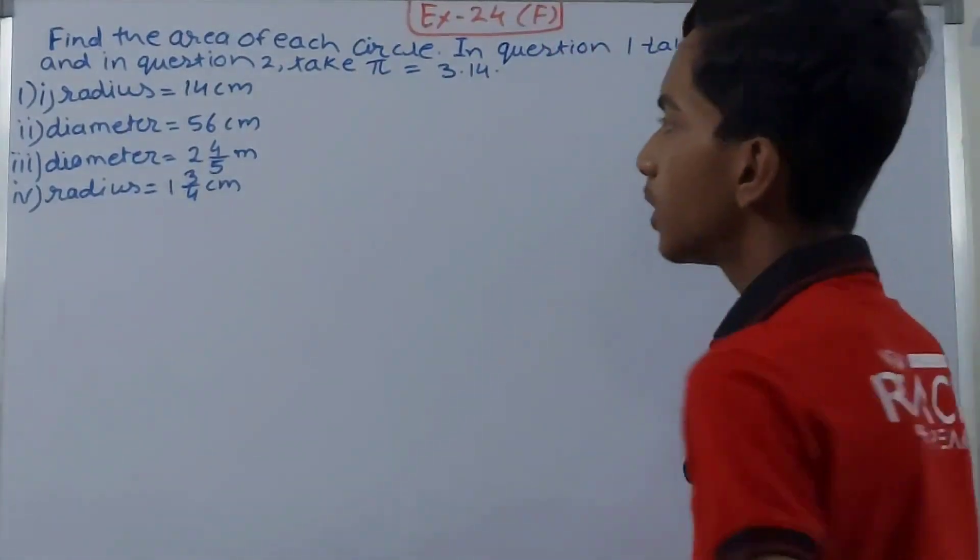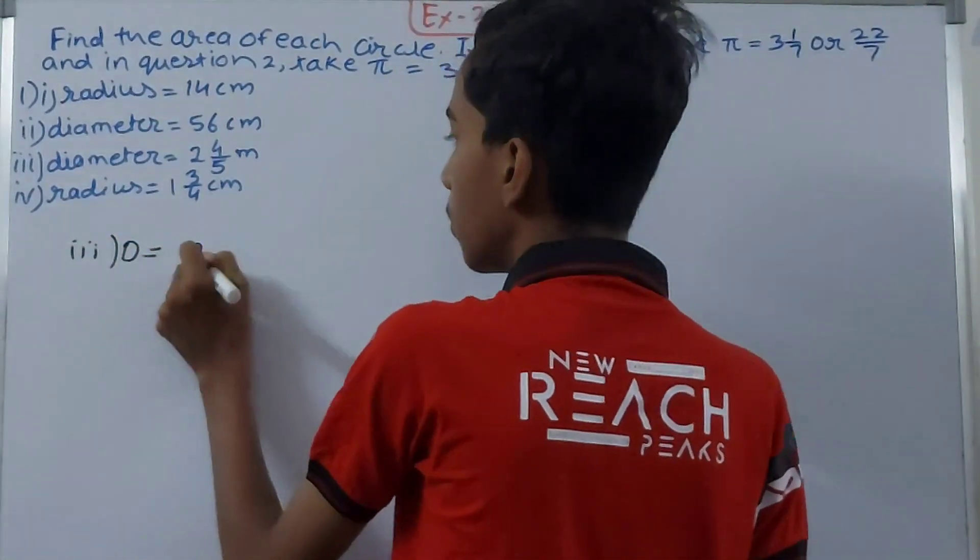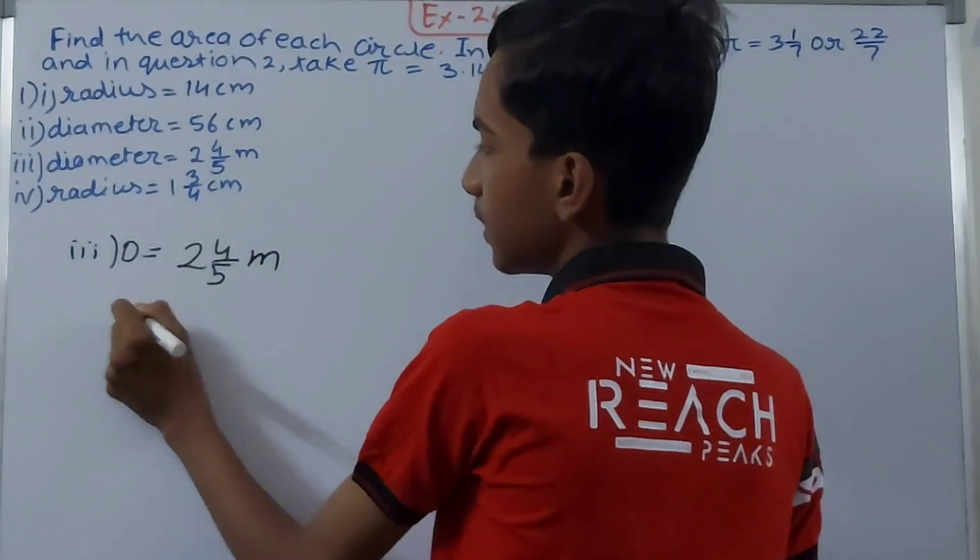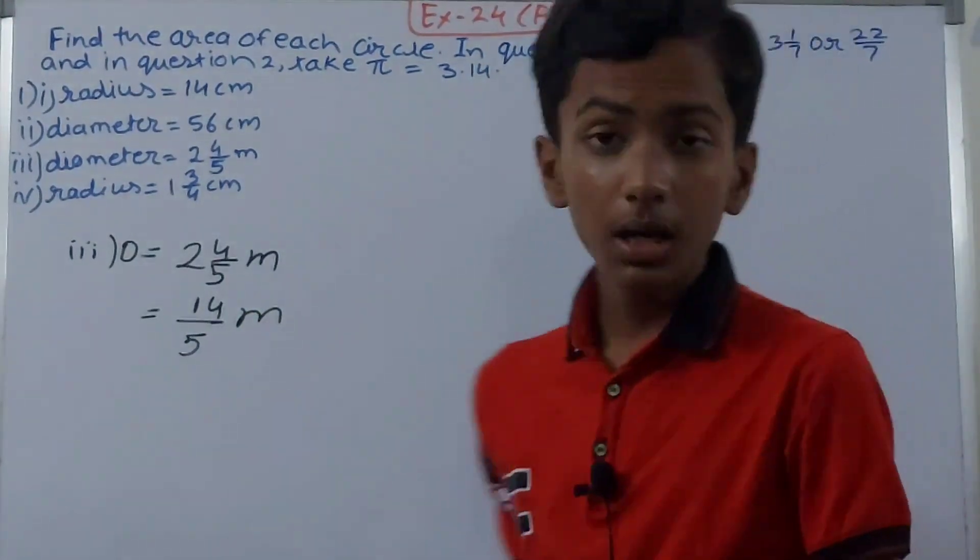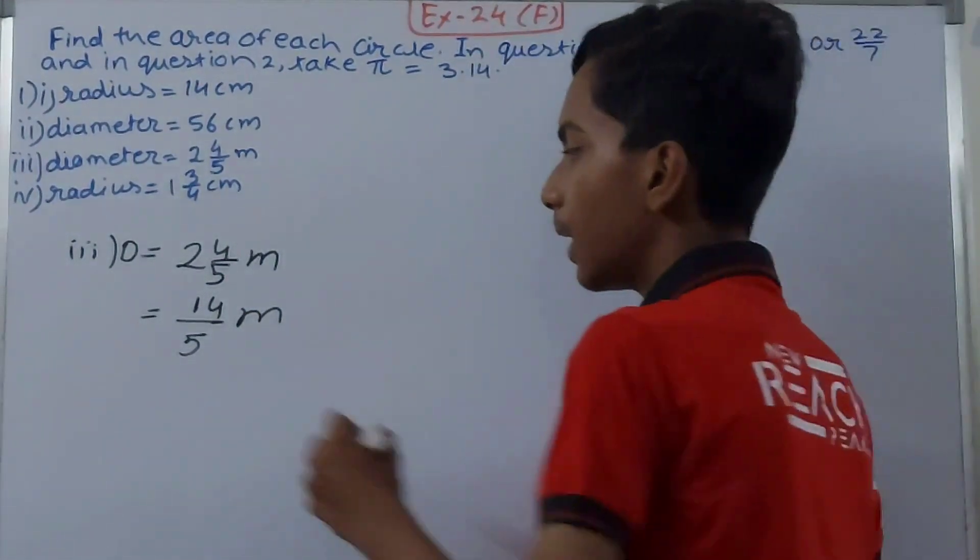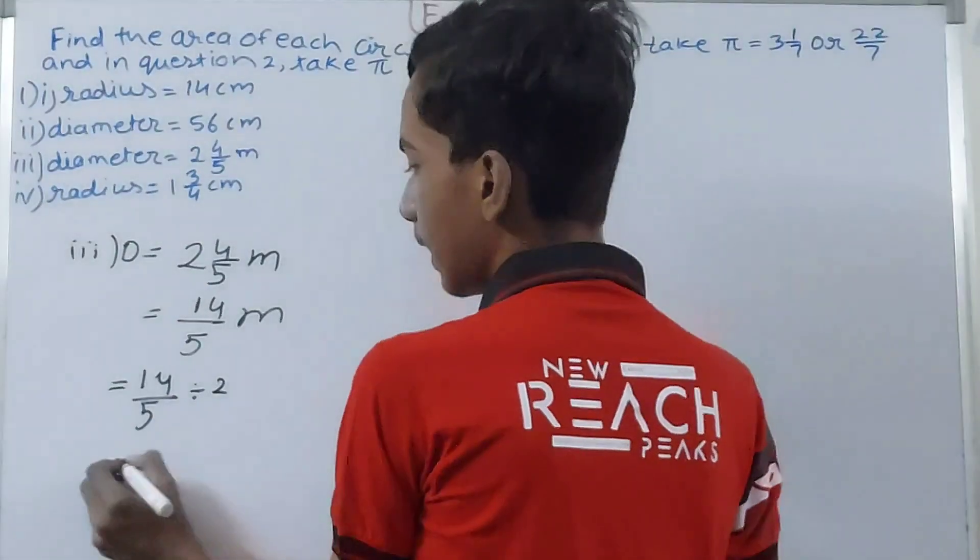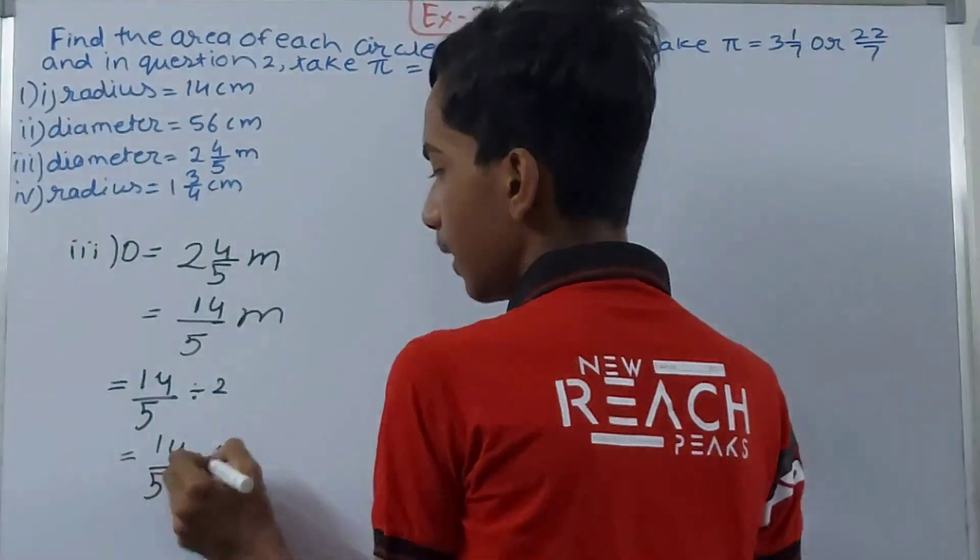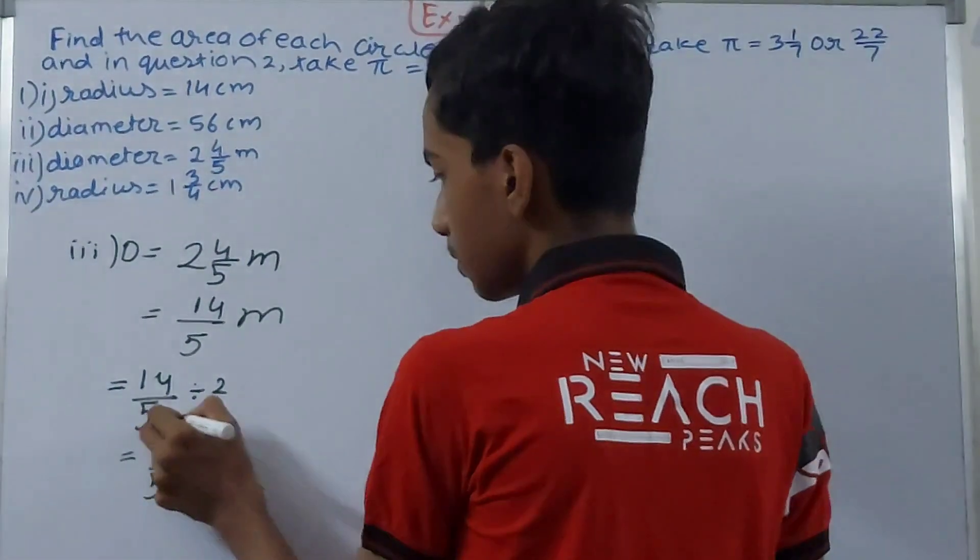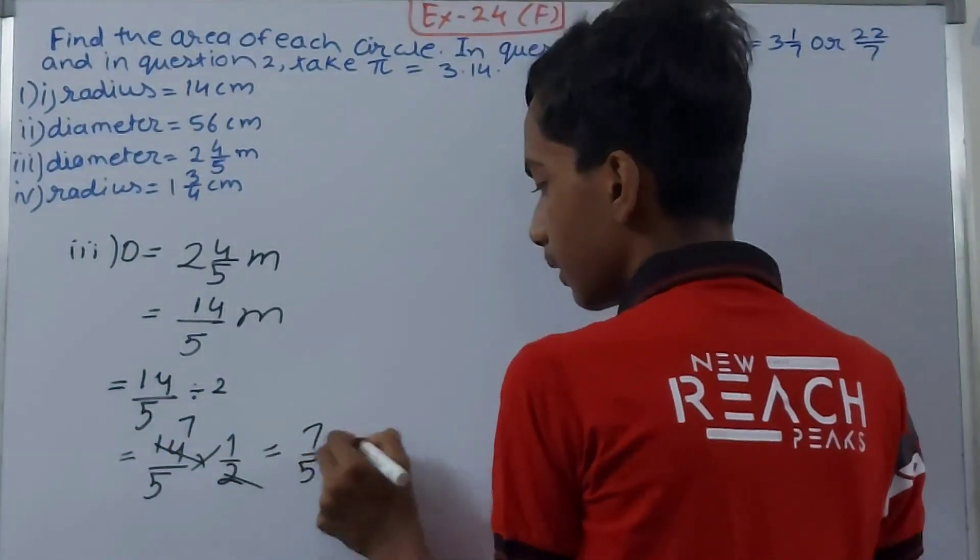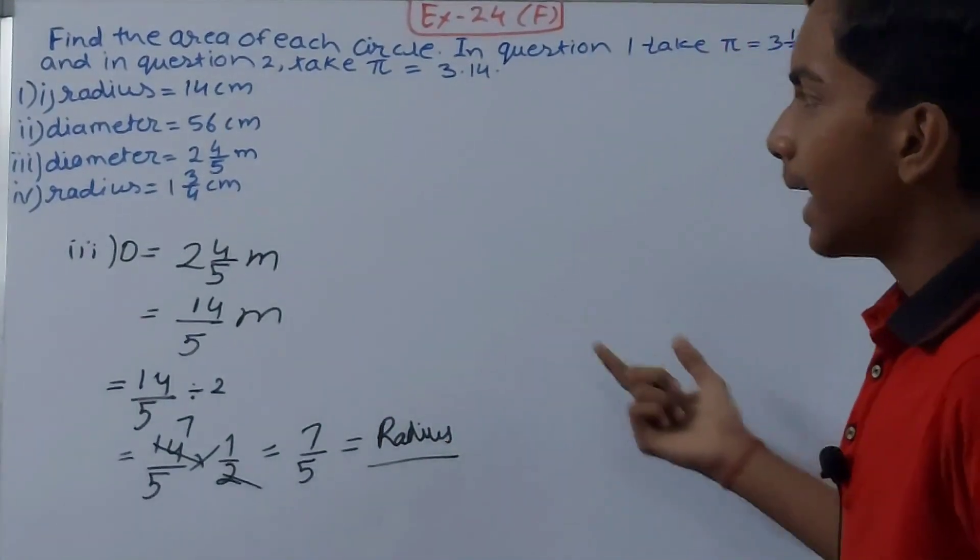Let's move on to the next part. The third one, again here we have diameter, that is 2 whole 4/5 meters, which will become 14/5 meters. Convert that to an improper fraction. Now diameter, divide this by 2, so 14/5 divided by 2, that will be 14/5 into 1/2. Why are we dividing by 2? Because we want the radius. So this will give us 7/5, this is the radius.